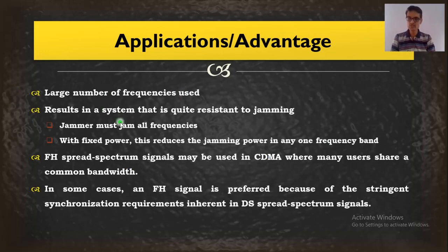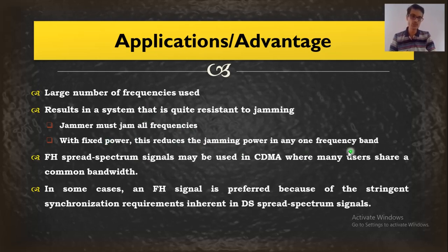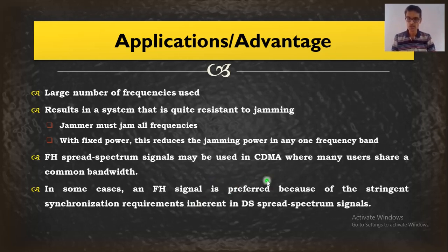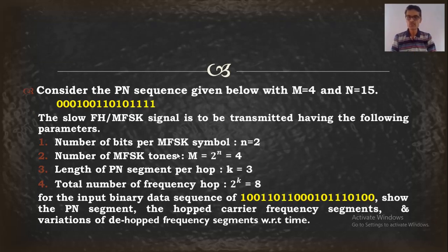The performance of the FHSS system is similar to the DSSS system, but the advantage is we can spread over a very wide bandwidth compared to even DSSS. W by R is the processing gain and PI by PS is the jamming margin or interference margin. For applications and advantages: using a large number of frequencies means a jammer must jam all frequencies, which is highly difficult. A single carrier frequency is easy to jam, but multiple frequencies with fixed power reduces jamming power in any one frequency band. FHSS may also be used in CDMA where many users share a common bandwidth.